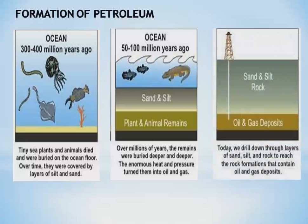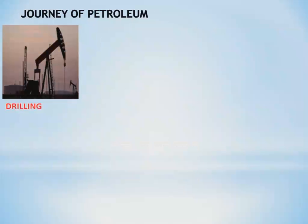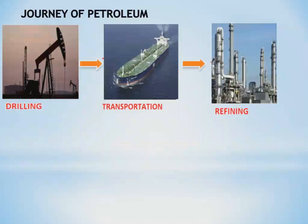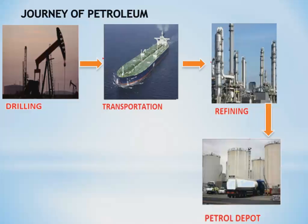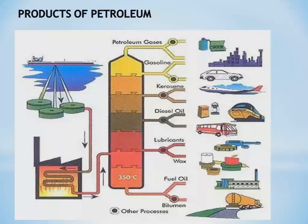Today we drill down through layers of sand, silt, and rock to reach the formations that contain oil and gas deposits. Once the oil is drilled, it is sent for transportation to refineries for refining the crude oil, then sent to petrol depots, and from there to petrol pumps. So the journey is: drilling → transportation → refining → depots → petrol pumps.